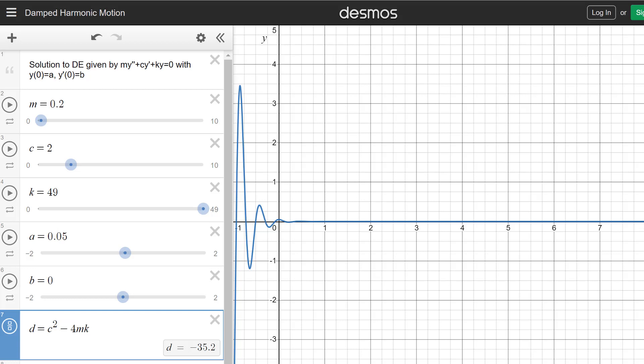Because t equals 0 corresponds to when the object was set in motion. So you could modify this so that the graph only shows for t greater than or equal to 0, but I'm just going to ignore that part of the graph that doesn't really make sense for t less than 0.